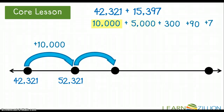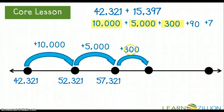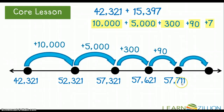Then I take my 5,000 and add it to 52,321, which gives me 57,321. The next number I add is 300, so 57,321 plus 300 is 57,621. After that, I add the tens value of 90, and 57,621 plus 90 is 57,711. Lastly, I add the 7, so 57,711 plus 7 is 57,718.